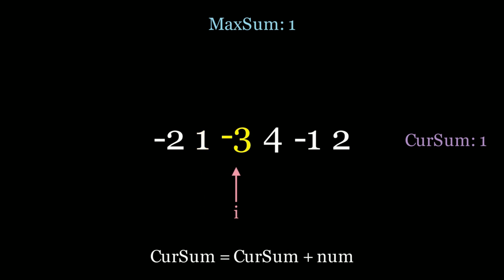Now let's go to negative 3. So now we're effectively looking at the subarray 1 negative 3, right? Because we reset cur sum at negative 2. Now we're at negative 3. Cur sum is equal to 1 minus 3, which is negative 2.